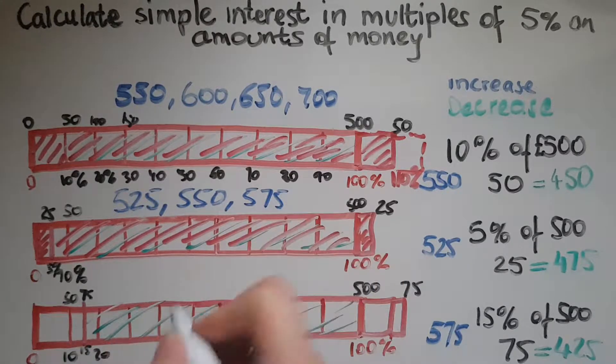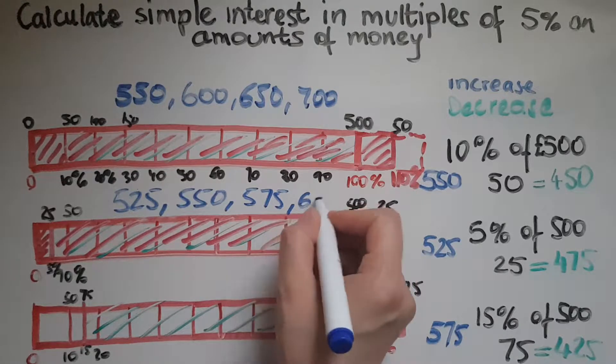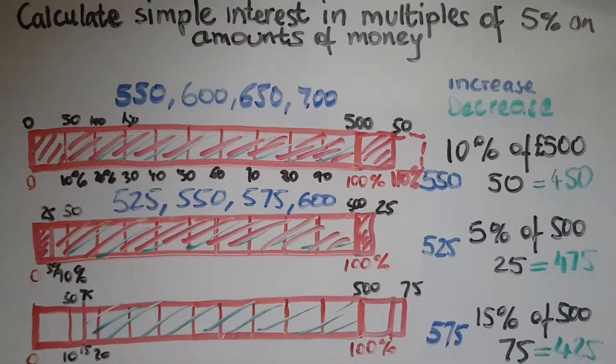£575 at the end of the third year, and £600 at the end of the fourth year and so on, adding £25 year on year.